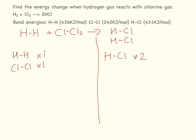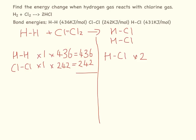Now we use the bond energies given to calculate the totals. The H-H bond energy is 436 kJ/mol, and we have one of those, so 1 × 436 = 436. The Cl-Cl bond energy is 242 kJ/mol, and we have one of those, so 1 × 242 = 242. Adding those together: 436 + 242 = 678 kJ/mol for the reactant side.